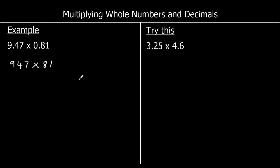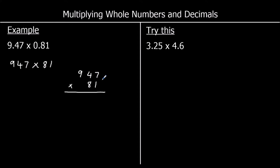Let's do 947 times 81 using long multiplication. We split this into 1 times 947 and 80 times 947. Starting with 1 times 947: 1 times 7 is 7, 1 times 4 is 4 in the tens, and 1 times 9 is 9 in the hundreds — giving 947.